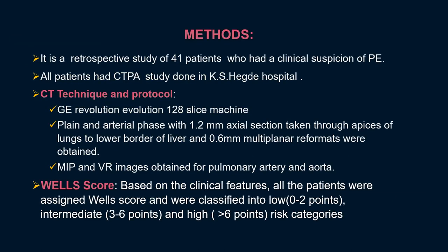We conducted a retrospective study on 41 patients who had clinical suspicion of pulmonary embolism, and all patients had CT pulmonary angiography done at KSG Medical Academy. The CT protocol was performed on a GE Revolution machine, 128-slice, and plain and arterial phase images were acquired with 1.2 mm axial sections taken from the apices of the lung to the lower border of the liver. Multi-planar reformats, MIP, and VR images were also obtained for the pulmonary artery and aorta.